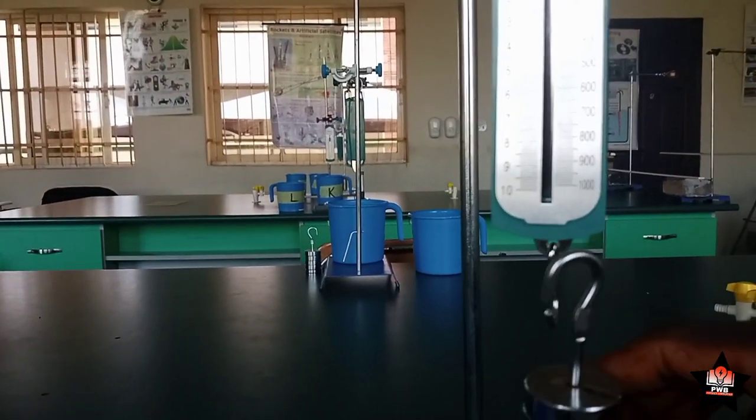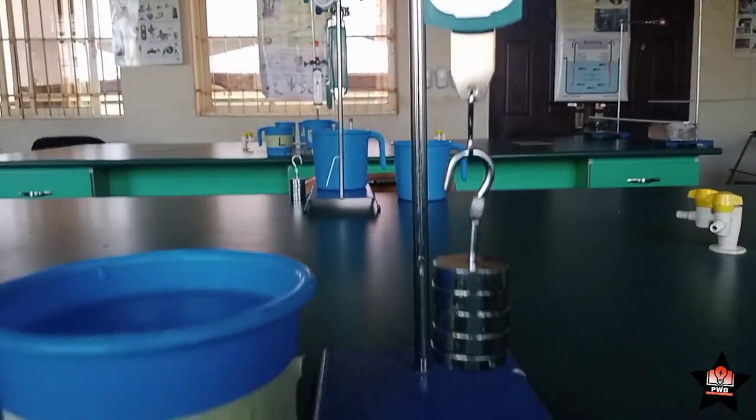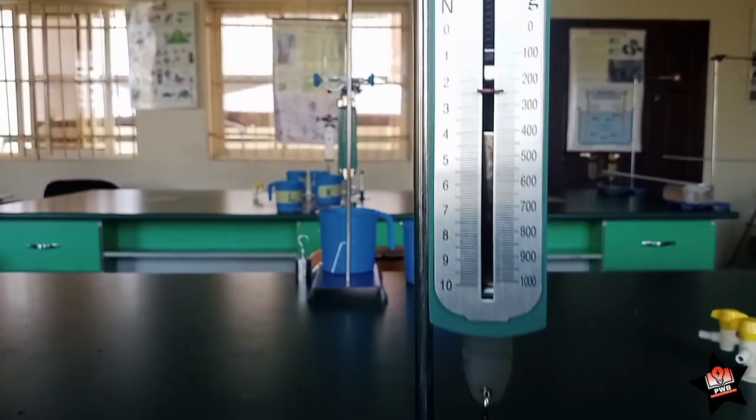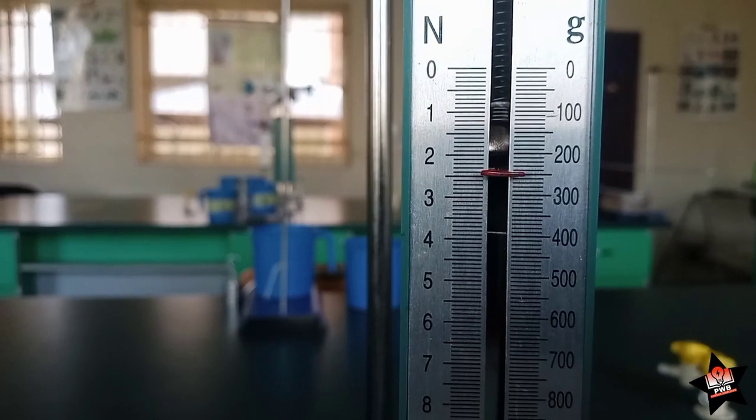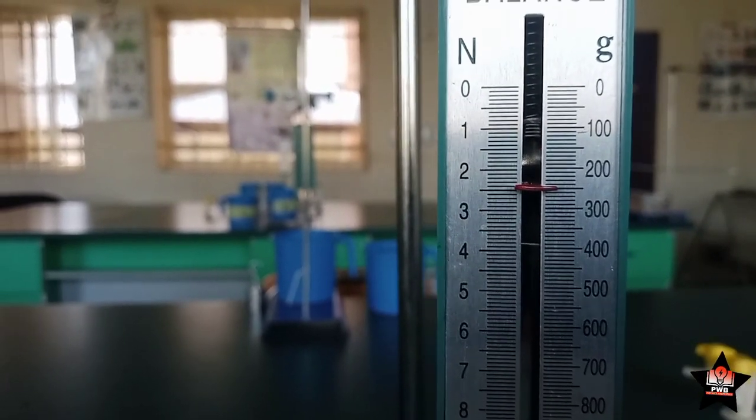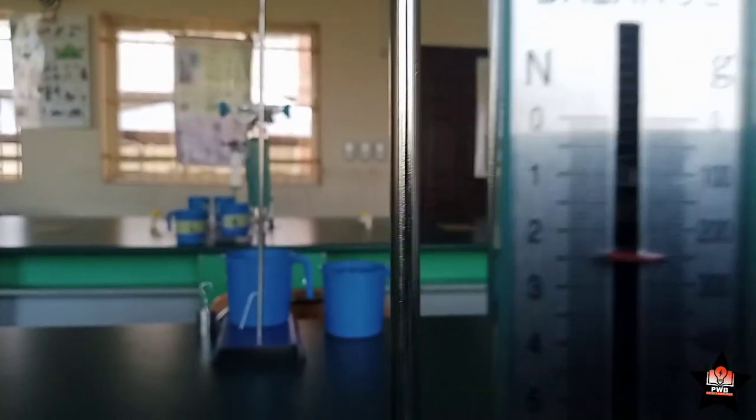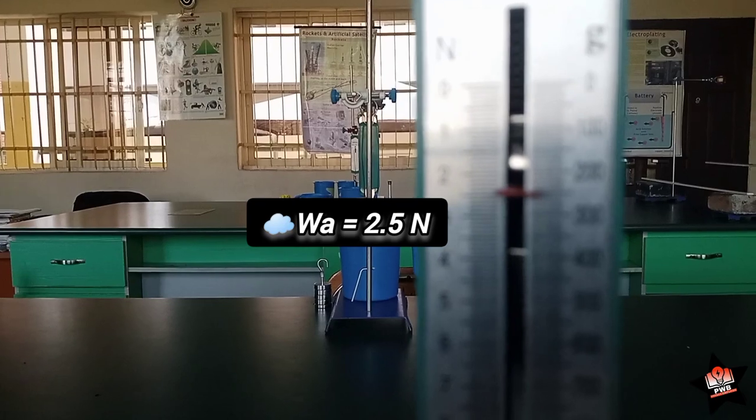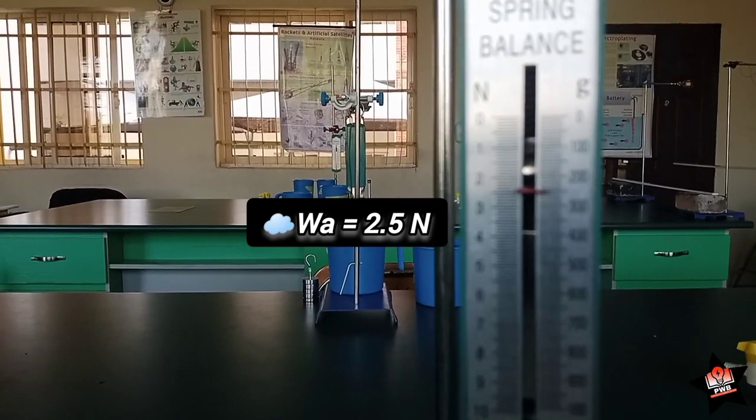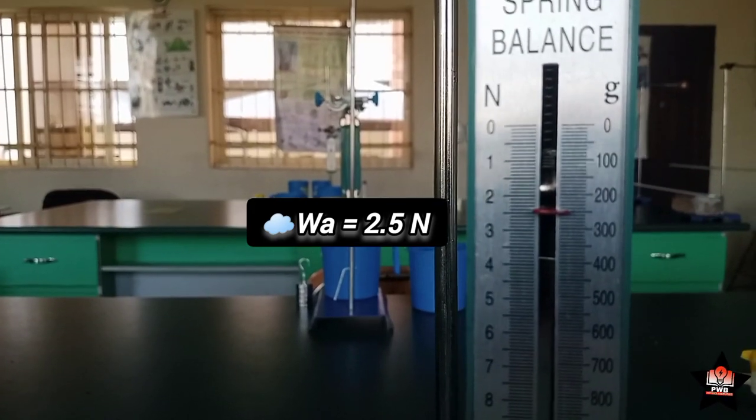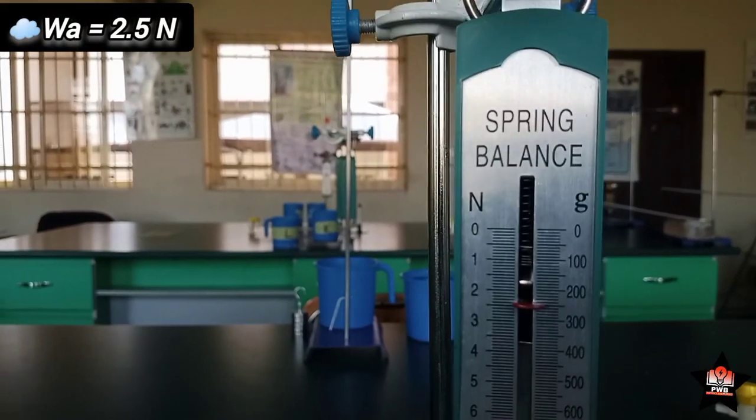Okay. Here we go. Good. Now, let's read this. What you see here is 250 grams and what you see here is 2.5 Newton. So, this 2.5 Newton is simply the weight in air. Weight in air is 2.5 Newton.